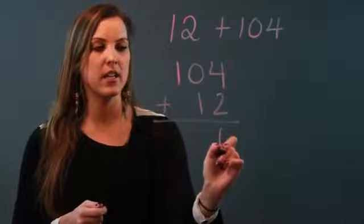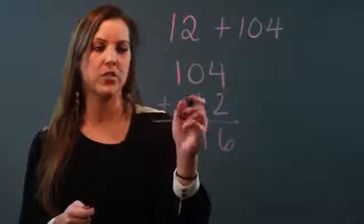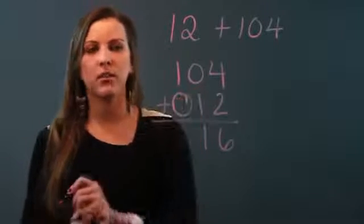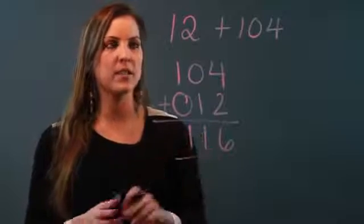So 4 plus 2 is 6, 0 plus 1 is 1, and 1 plus, there's nothing here, so if I wanted to do a space holder, I could put a zero there and I have 1 plus 0 is 1 and so my sum is 116.